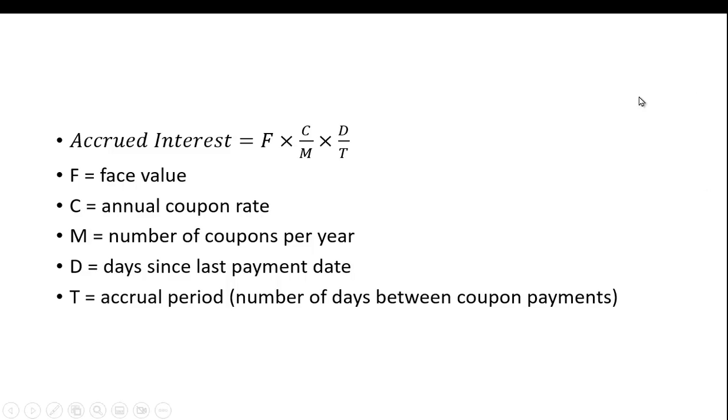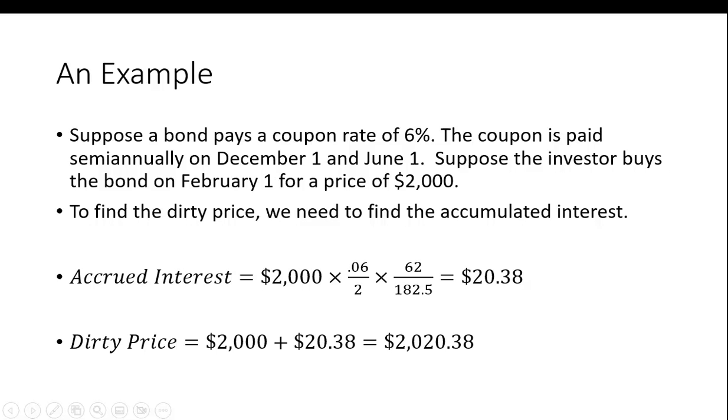Alright, so let's take a look at an example. Suppose a bond pays a coupon rate of 6%. The coupon is paid semi-annually on December 1st and June 1st, and suppose the investor buys the bond on February 1st for a price of $2,000. Let's find the dirty price. To do that we need to find the accumulated interest.